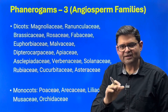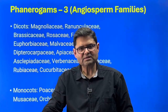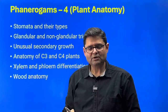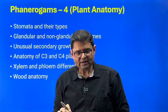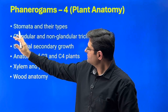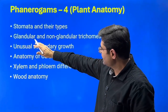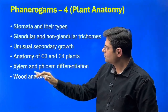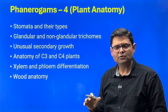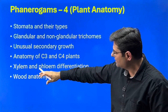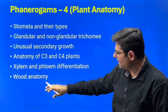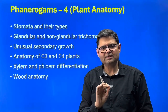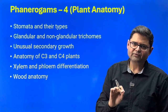Plant anatomy is a small section but still yields some questions. Topics include stomata and their types, trichomes — glandular and non-glandular — and unusual secondary growth, preceded by understanding normal secondary growth. Then xylem and phloem differentiation and wood anatomy. C3 and C4 anatomy needs to be done at the leaf level — Kranz anatomy must be known very well.